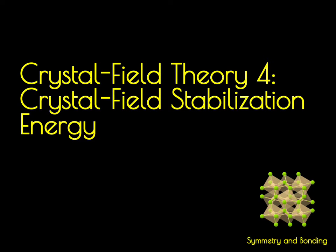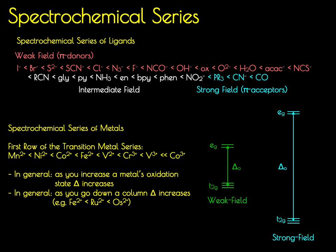In this video, we're going to define crystal field stabilization energy and use this to try to rationalize some physical properties of molecules. In a previous video, we defined the spectrochemical series — a series in which we consider either the ligand or the metal center's influence on the splitting between the energy levels in the D set, for example delta O in an octahedral compound, the splitting between the T2g and the Eg set. In this video, we're going to further develop this concept and employ it towards understanding the stability of a transition metal complex.